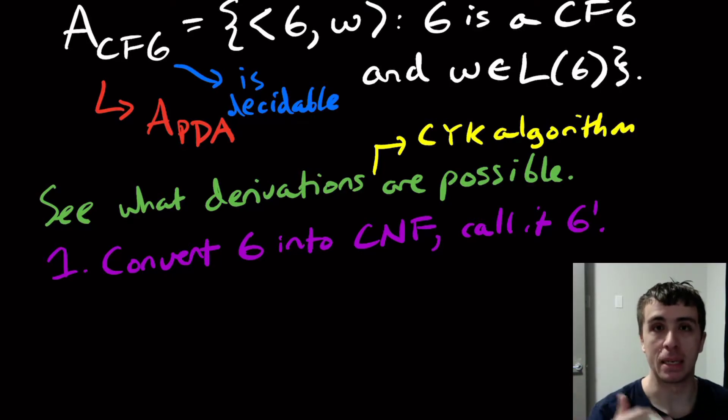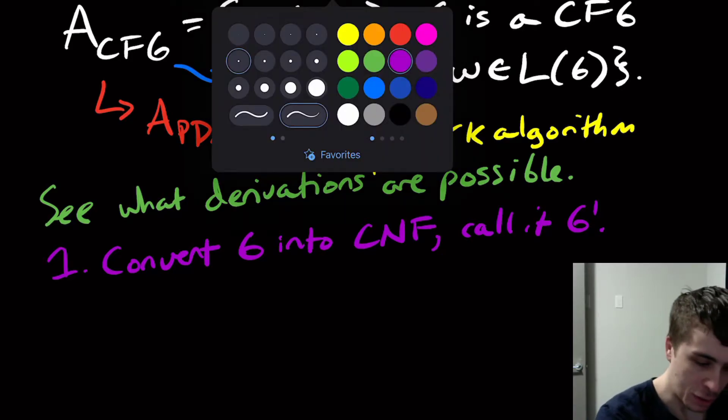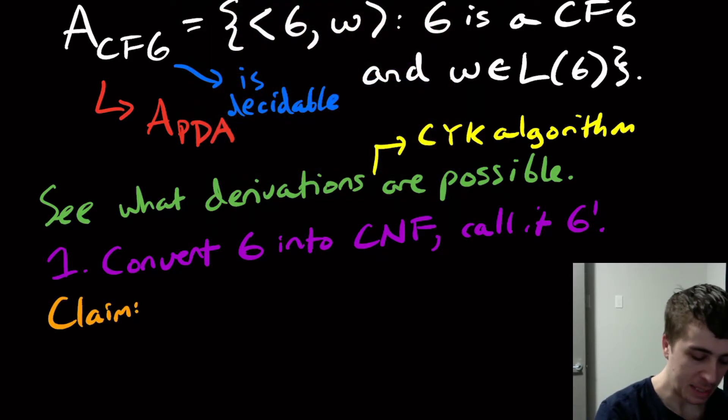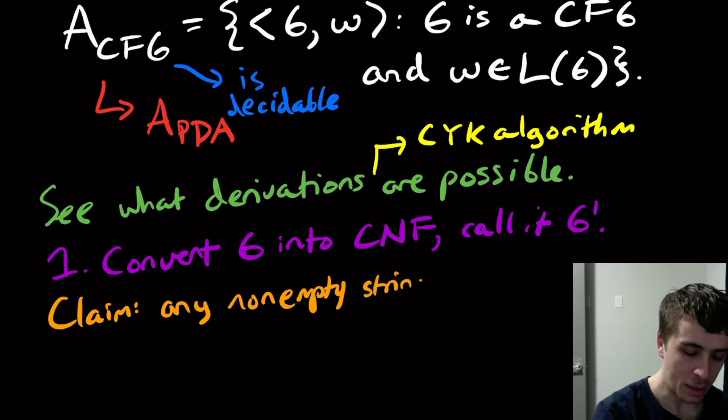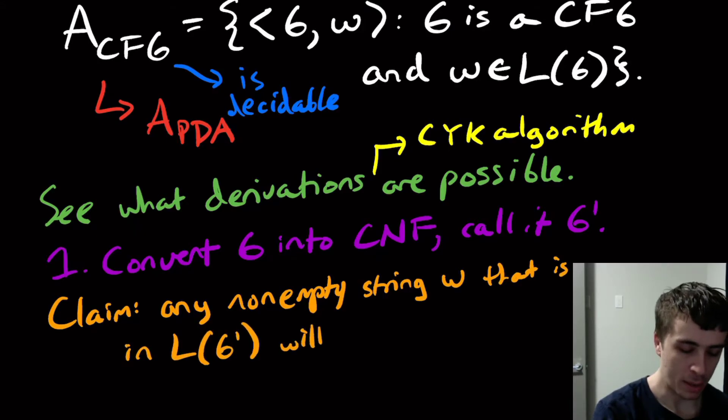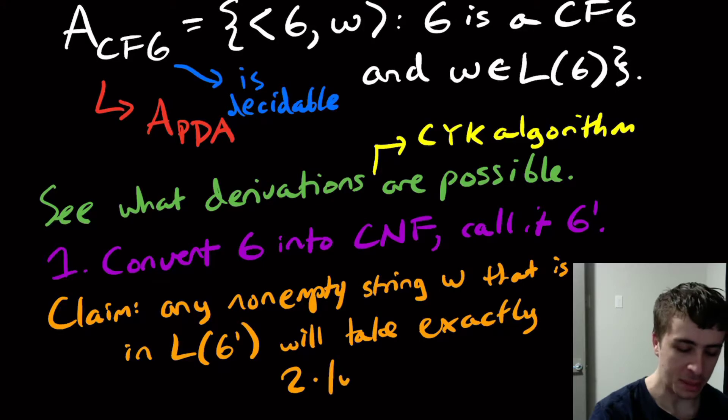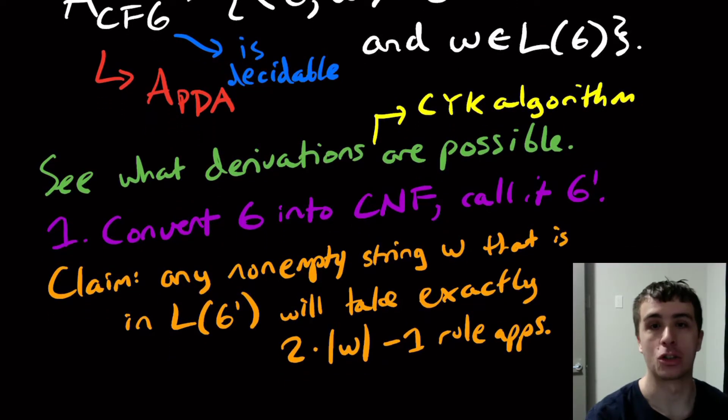And we know we can always do this because not only is it algorithmic, but we showed in the conversion video that you can do it for any context-free grammar. So I'm just going to call it G'. And one thing that I'm going to claim here is that any non-empty string, any non-empty string, let's say w, that is in the language of G' will take exactly 2 times the length of w minus 1 rule applications to actually make the string.